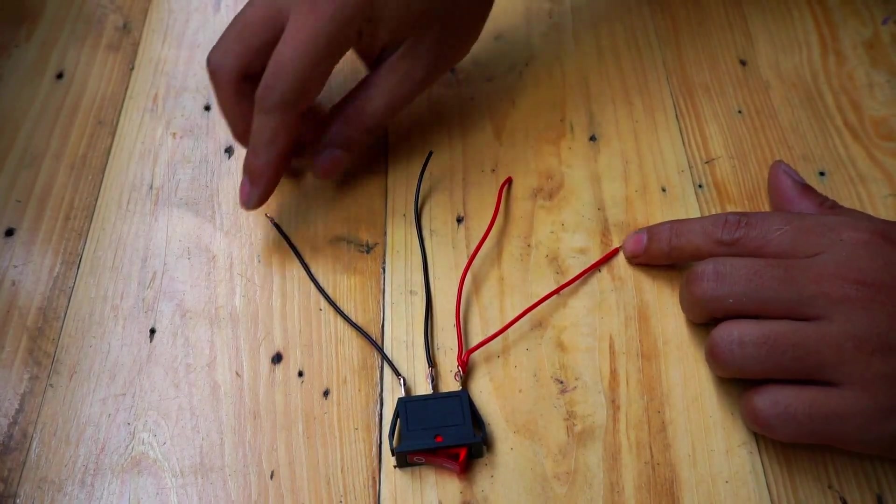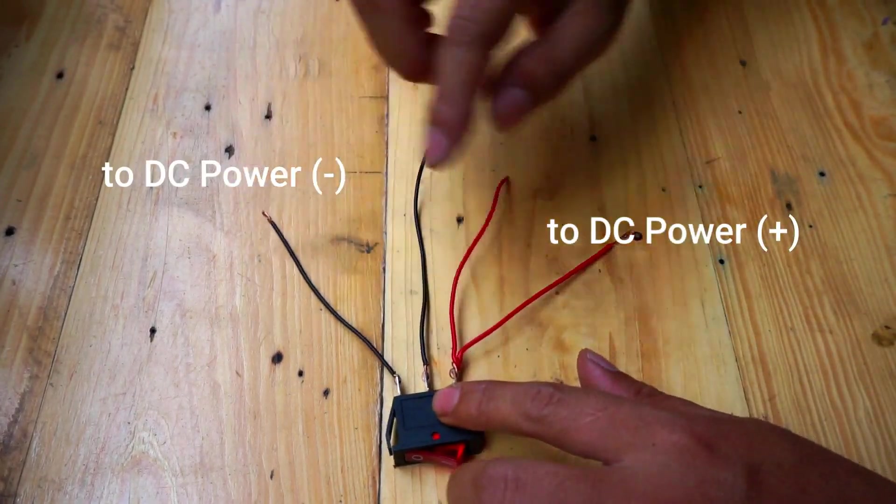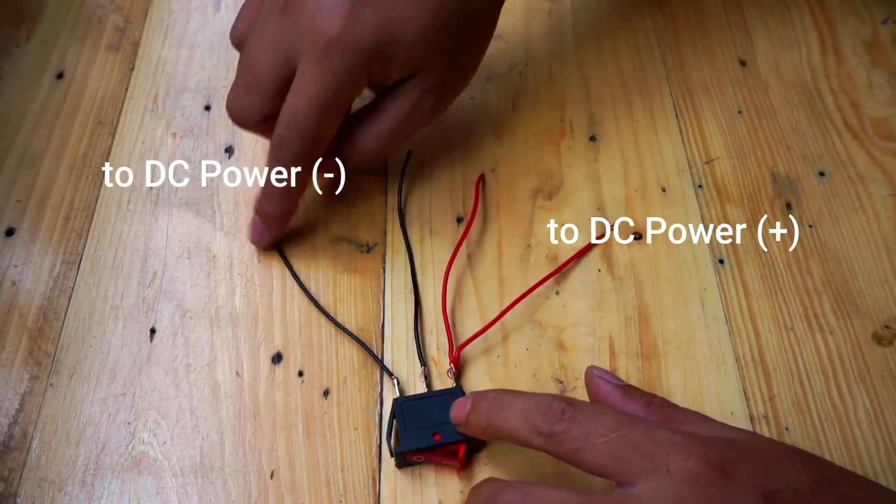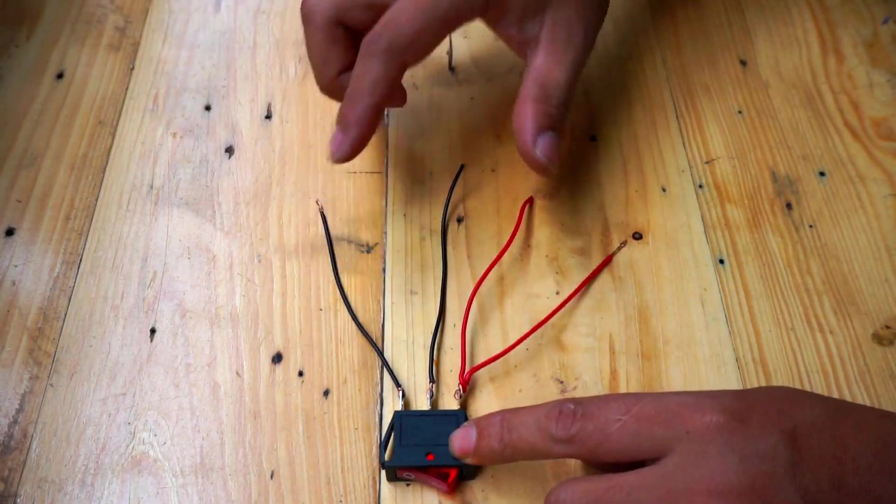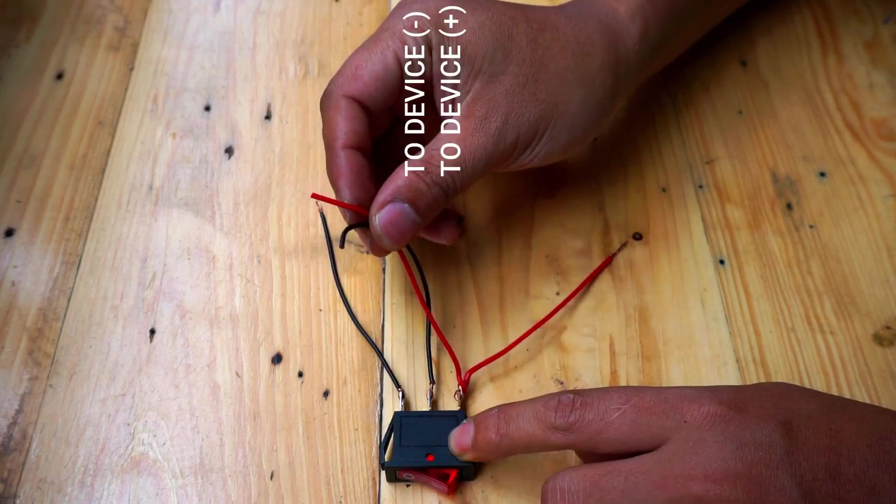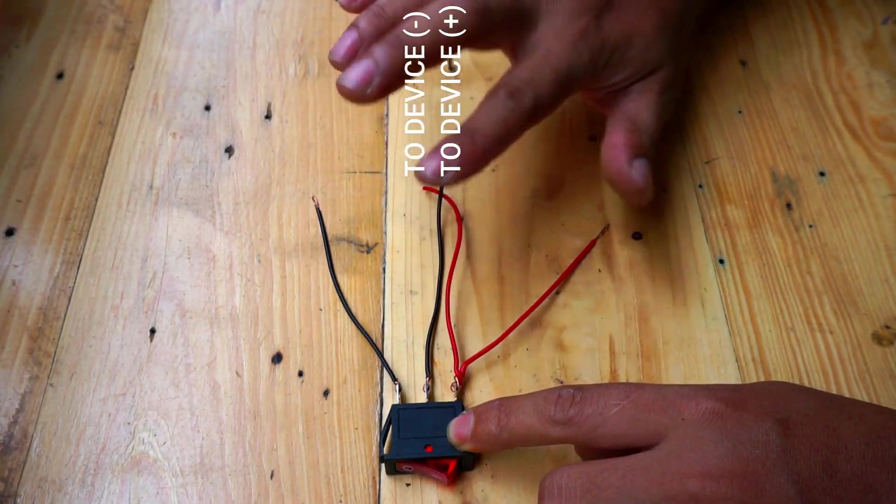These two wires go to the DC power source and these two wires in the middle go to the device.